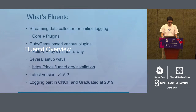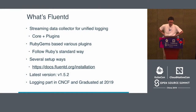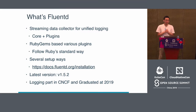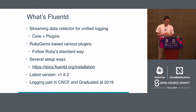First is the Fluentd overview. Fluentd is designed for streaming data collection — it continuously reads data and sends it to the destination in a streaming manner, unlike the batch model. Fluentd focuses on low-latency log transfer. Fluentd uses RubyGems for plugin development and distribution, which is a standard platform on Ruby. We can use any Ruby library to develop plugins and easily distribute them via RubyGems, making it easy to write and reuse plugins.